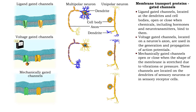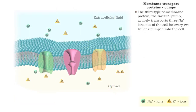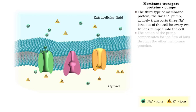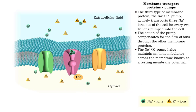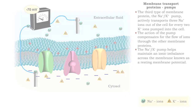Mechanically gated channels are opened or closed by vibrations or pressure stretching the shape of the membrane. These channels are located on the dendrites of sensory neurons, or in sensory receptor cells. This action helps maintain the ionic imbalance across the membrane, as it offsets changes resulting from the ionic flows through the gated channels. This imbalance is known as a resting membrane potential.